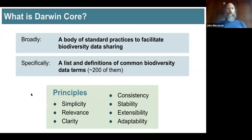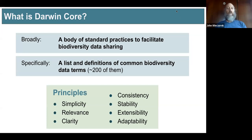So what is Darwin Core? Broadly speaking, it's a body of standard practice to facilitate the sharing of biodiversity data. Specifically, in terms of what you find on the page for Darwin Core standard: the thing that is the standard is a list of terms and their definitions for things that are commonly shared in biodiversity networks. There are around 200 such terms.